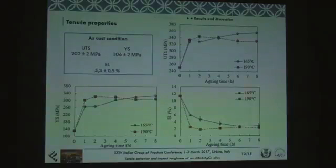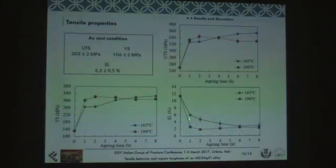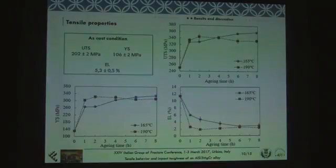More interesting is the information regarding elongation. It is possible to see that if we perform an aging treatment at 190°C, already after one hour of aging we have a severe drop in elongation, which is not suitable. So it is suggested to perform a heat treatment at 160°C, and with aging times between one hour and four hours, we can ensure an elongation between 4 and 6%.